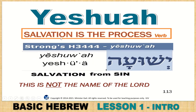Yeshua — salvation is the process. He is a savior, he is in the process of saving. H3444 — his name is not Yeshua, that is the process — salvation from sin. This is not the name of the Lord; it is his process.